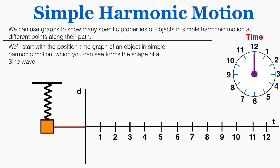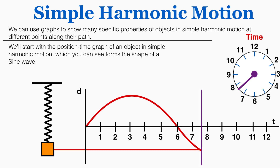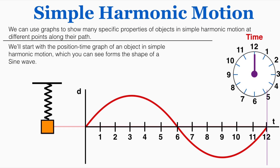We use many different types of graphs to show properties of objects in simple harmonic motion. Starting with the position-time graph: the y-axis shows displacement of the spring from its equilibrium position, and the x-axis shows time. As the spring oscillates, the graph of its displacement over time forms a sine wave. All graphs of simple harmonic motion work this way — pendulums and any other object in simple harmonic motion also produce sine wave or cosine wave graphs.